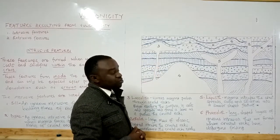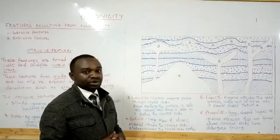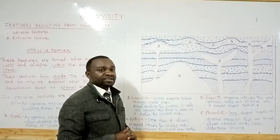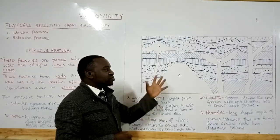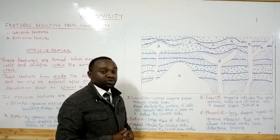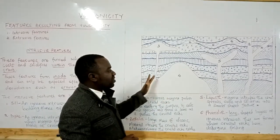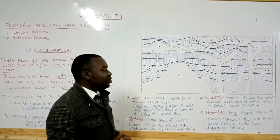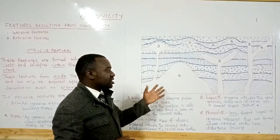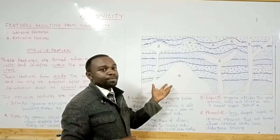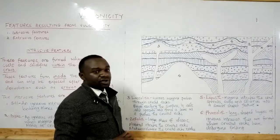The fourth feature is what we call the batholith. The batholith is the largest igneous intrusion feature. It is formed when a large mass of volcanic material intrudes the crustal rocks. Due to the nature of the hot volcanic material, the rocks in contact with the feature are always metamorphosed as a result of the great heat, so the surrounding rocks are always different in nature due to metamorphosis.